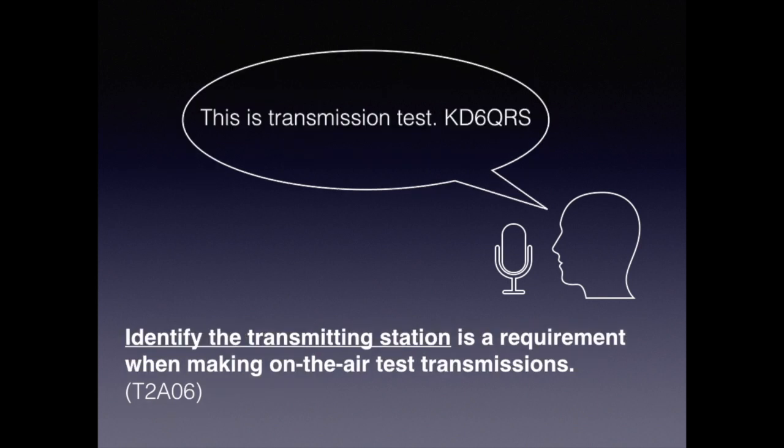We're never supposed to transmit without giving our call sign. So if you're making a test transmission, you would just say something like: this is a test transmission, KD6QRS. The test question is: identifying your transmitting station is a requirement when making an on-air test transmission.